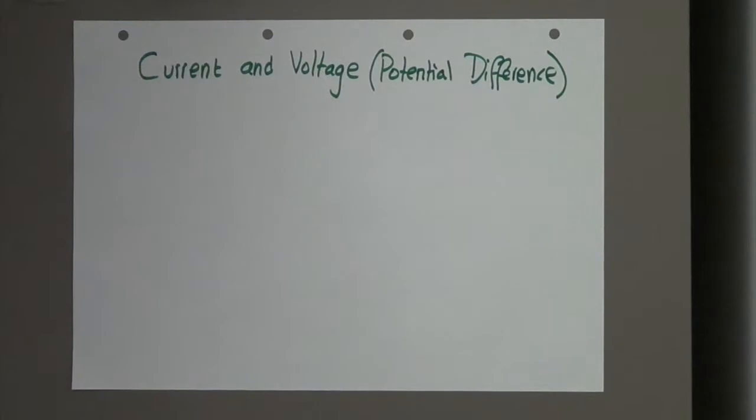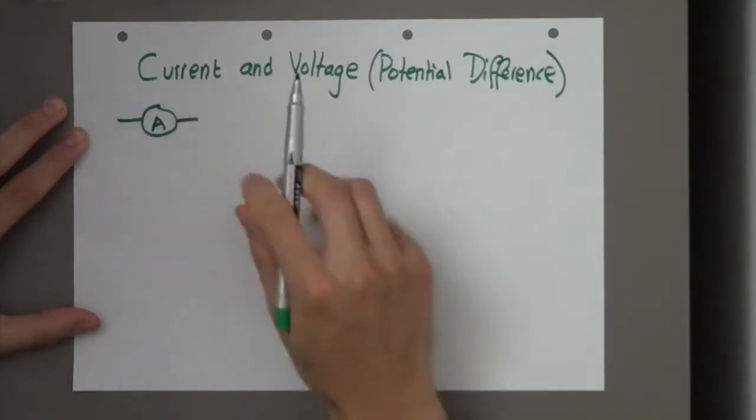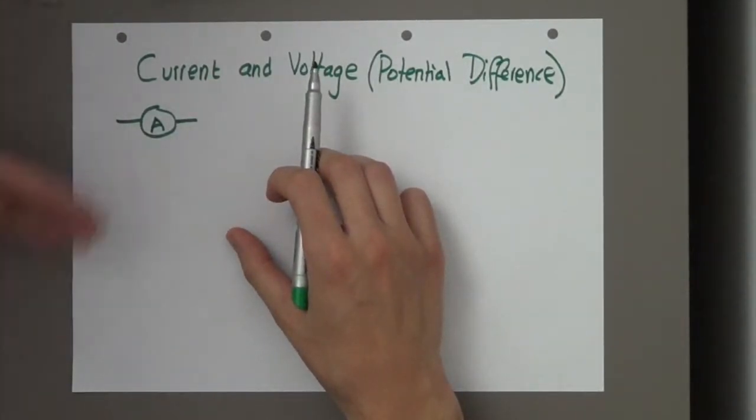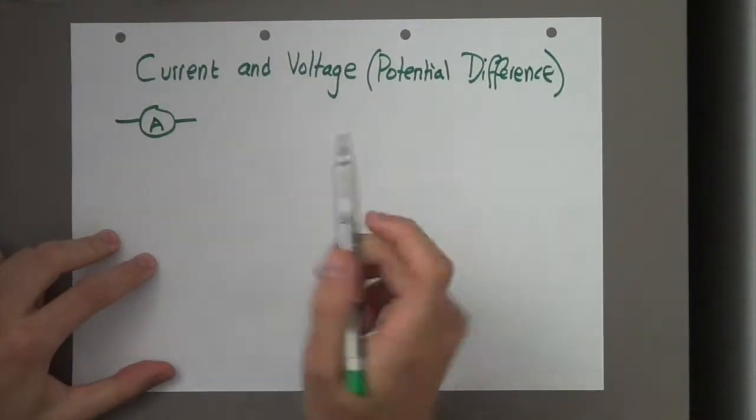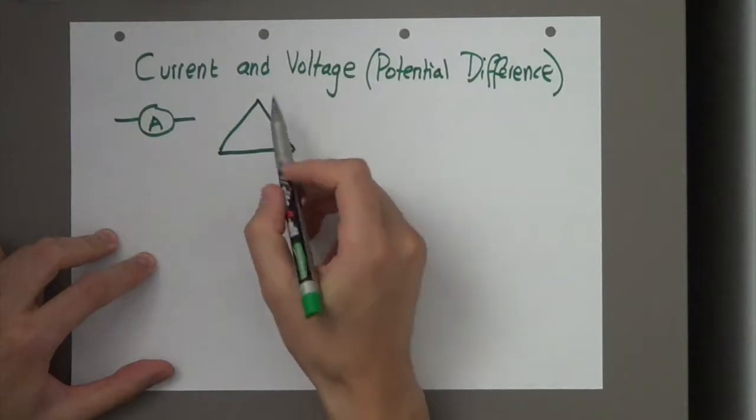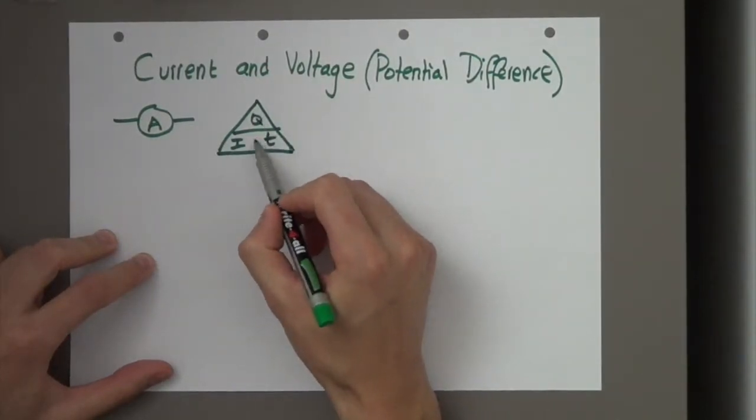We're in lesson two, which is current and voltage. Last lesson, I introduced to you an ammeter. And what does an ammeter do? Well, it measures the amount of charged particles or electrons passing through a point per second. In today's lesson, we're going to be looking at what current is exactly.